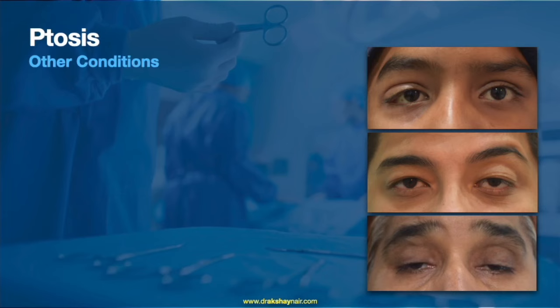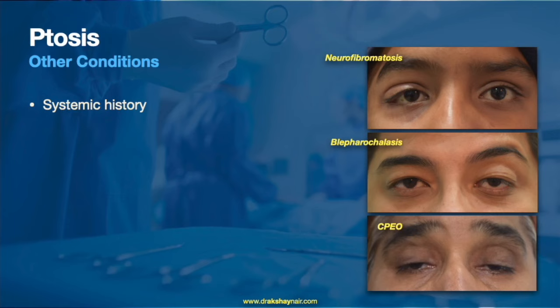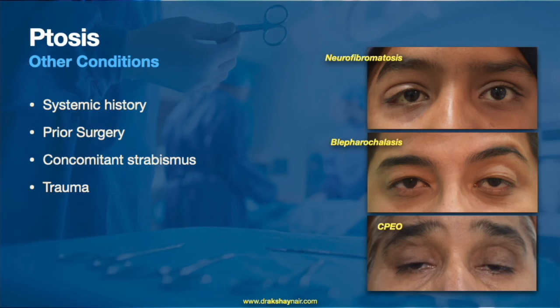Multiple systemic conditions can be associated with ptosis, such as neurofibromatosis, blepharochalasis, and chronic progressive external ophthalmoplegia. A detailed systemic history, along with a clear history of prior eyelid surgery, concomitant strabismus, and any history of trauma, should always be noted.